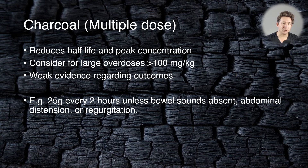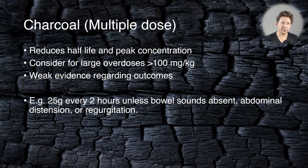Whether that translates into improved outcomes is unknown, but it's probably worth considering for big overdoses of greater than 100 milligrams per kilo. If you're going to give lots of doses of charcoal, you need to make sure the patient is not in ileus — that means listening for bowel sounds, checking for abdominal distension, and checking for regurgitation of charcoal or charcoal coming back up the NG tube if they have one.